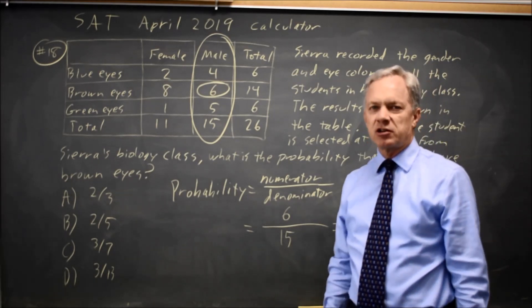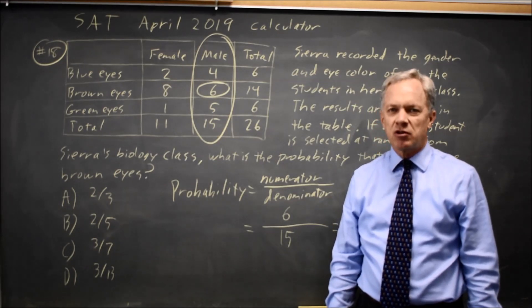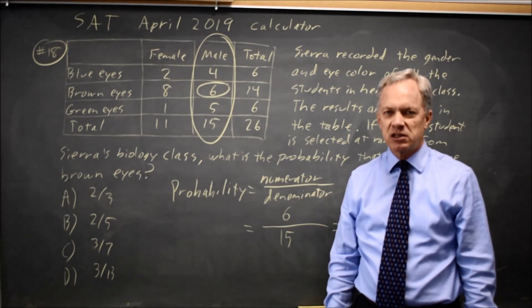You could use your calculator. You can divide the numerator and denominator by 3, or factor out a 3 from both and cancel those 3s.